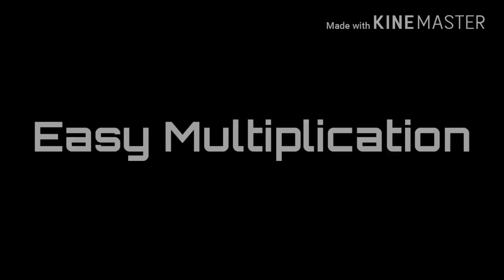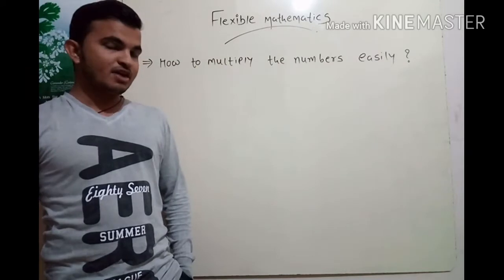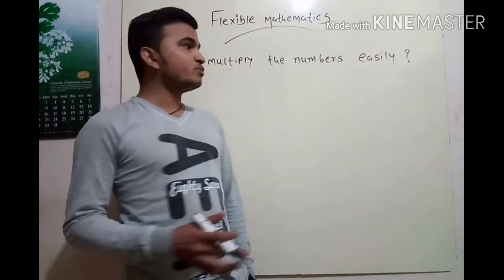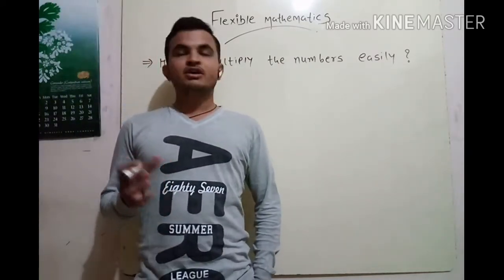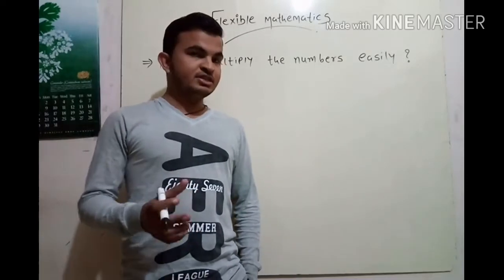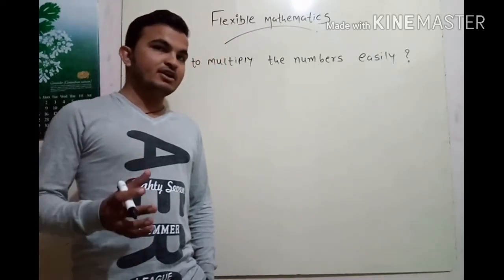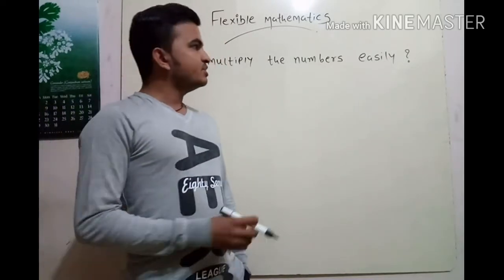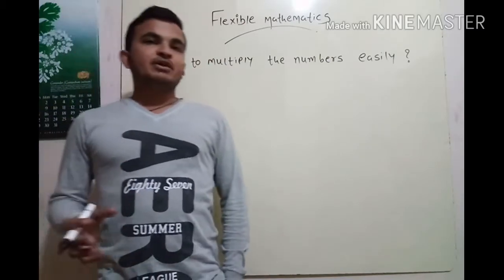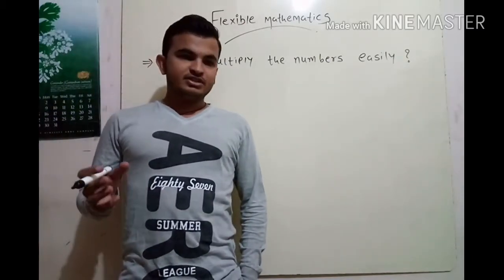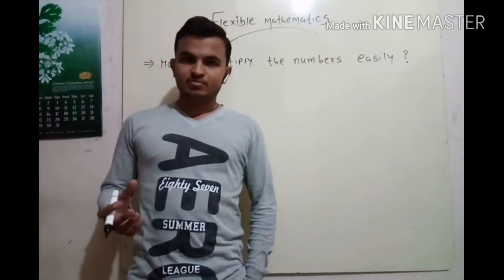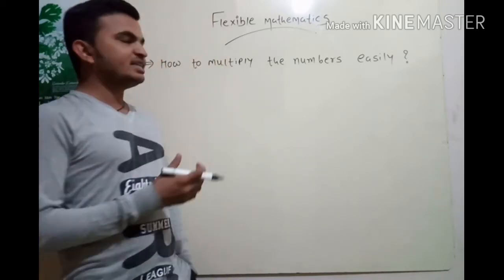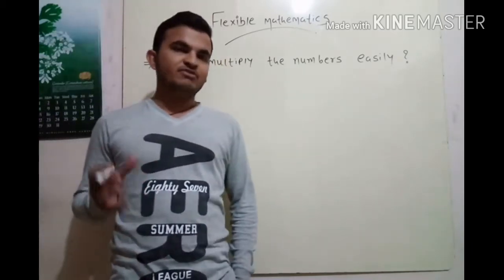Hello friends, this is Adit Nolok here and you are watching my channel Flexible Mathematics. Today I will teach you how to multiply numbers easily which are near to the power of 10 — meaning near to 10, 100, 1000, and so on. There are many methods and this is not my own method; this is actually Vedic Math, but I am representing that method in front of you.